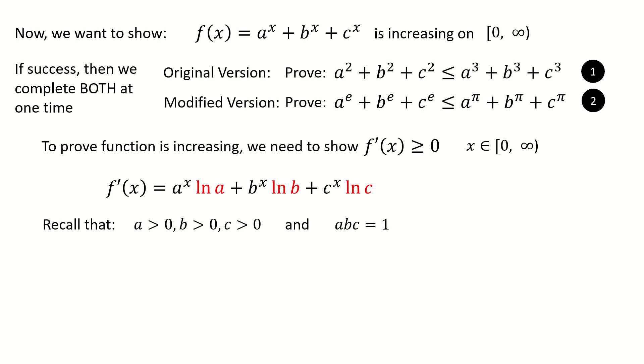Recall the given conditions. a, b, c, they are positive numbers, and the product abc is 1. But a, b, c, maybe some of them can be between 0 and 1. For example, if a is 1/2, then ln a is ln(1/2), which is a negative number. In that case, we cannot guarantee all the three terms are non-negative. Seems we stuck here. But we don't want to give up.